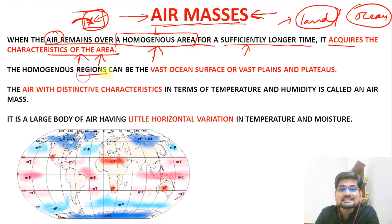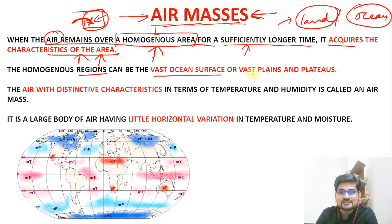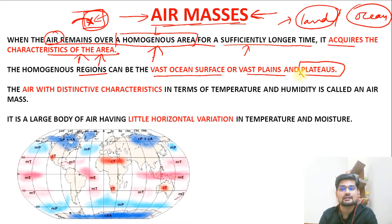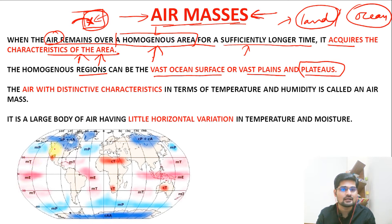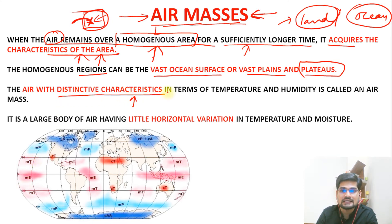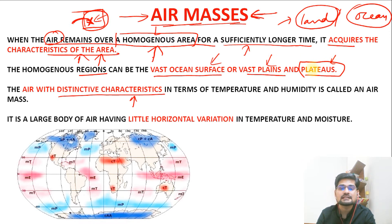The homogeneous regions can be vast ocean surfaces, vast plain areas, or vast plateau areas as well. Whatever be the surface, it has to be homogeneous — that is the first principle. So the air with distinctive characteristics forms over oceans, vast plains, or plateaus, acquiring distinctive characteristics based on these areas.